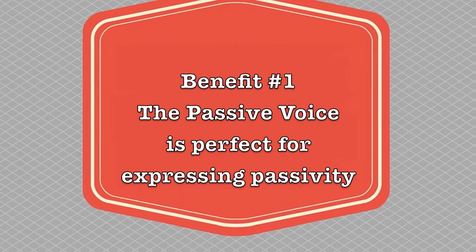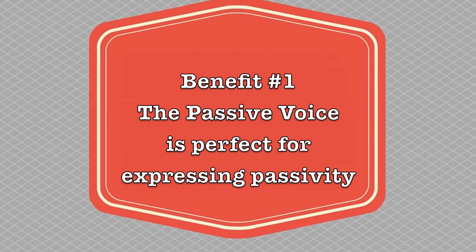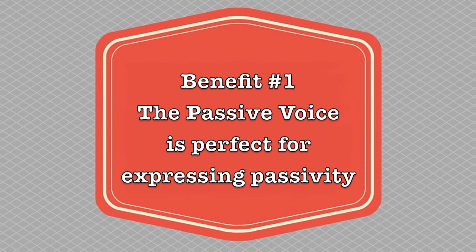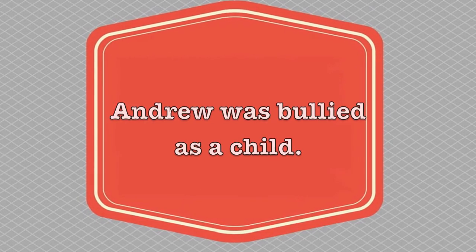Every problematic construction in the English language exists because there are situations in which that construction is exactly what you need. When you're expressing passivity, for example, the passive voice is perfect. Consider: 'Andrew was bullied as a child.' To be a victim of bullying is to be in a position of passivity, and in this case it doesn't matter who the bullies — who the actors — were, even if the writer happens to know their names.